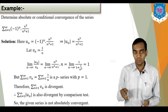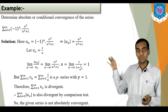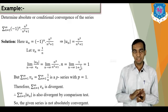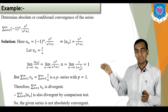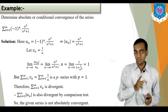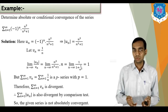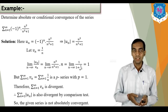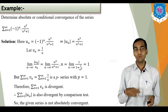For the limit comparison test, find the limit of |u_n|/v_n. Applying the limit gives 1, which is non-zero and finite — so the condition is satisfied. Now sigma v_n = sigma 1/n is a p-series with p = 1, so sigma v_n is divergent. Therefore sigma |u_n| is also divergent by comparison test. That means the mode series is not convergent, so the series is not absolutely convergent. Now we have to check conditional convergence.